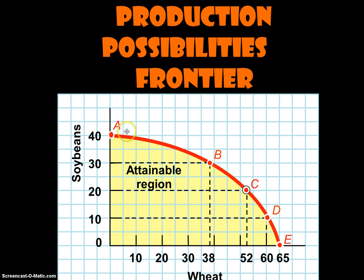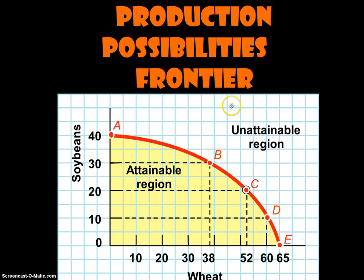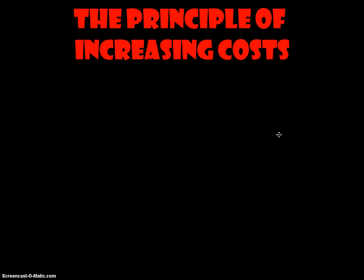Any point on the curve itself is going to be efficient, using all of your resources. Any point outside the curve is unattainable — because of scarcity, we can't go outside the curve. For example, we can't grow 40,000 bushels of soybeans and 65,000 bushels of wheat given this plot of land. It's simply not possible; we don't have enough resources to do that.